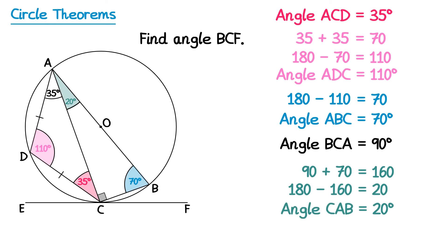There's only one more step to complete the question. We're looking for angle BCF. We can use the alternate segment theorem to show that this equals the angle we just found — this 20 degrees is the same as the angle BCF. So angle BCF equals 20 degrees. We didn't write down worded reasons because the question didn't ask for them, but we put down substantial working out and labelled every angle on the diagram. Note that this isn't the only way to solve this question — as long as you get the right answer and show your method clearly, you will get full marks.